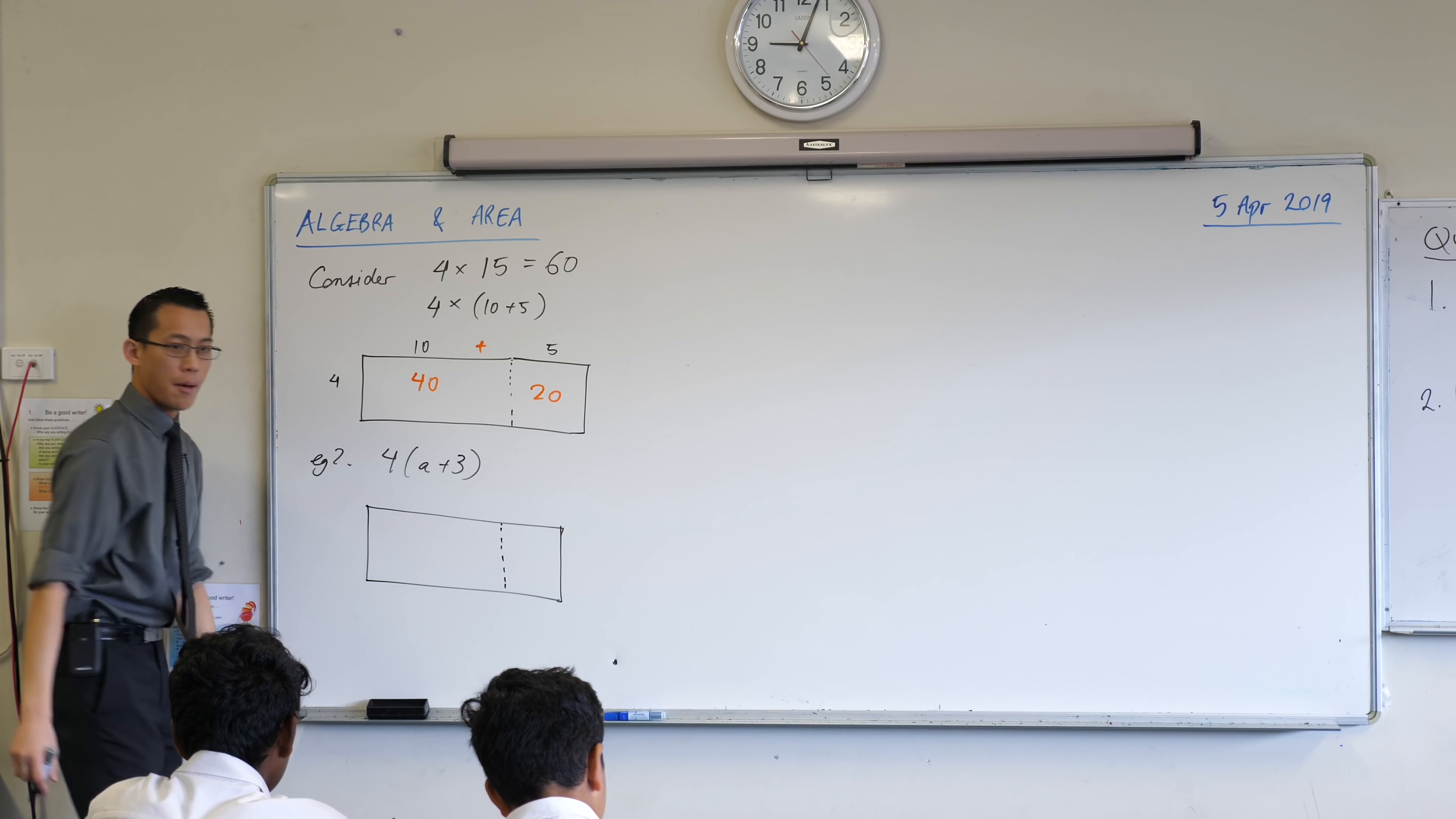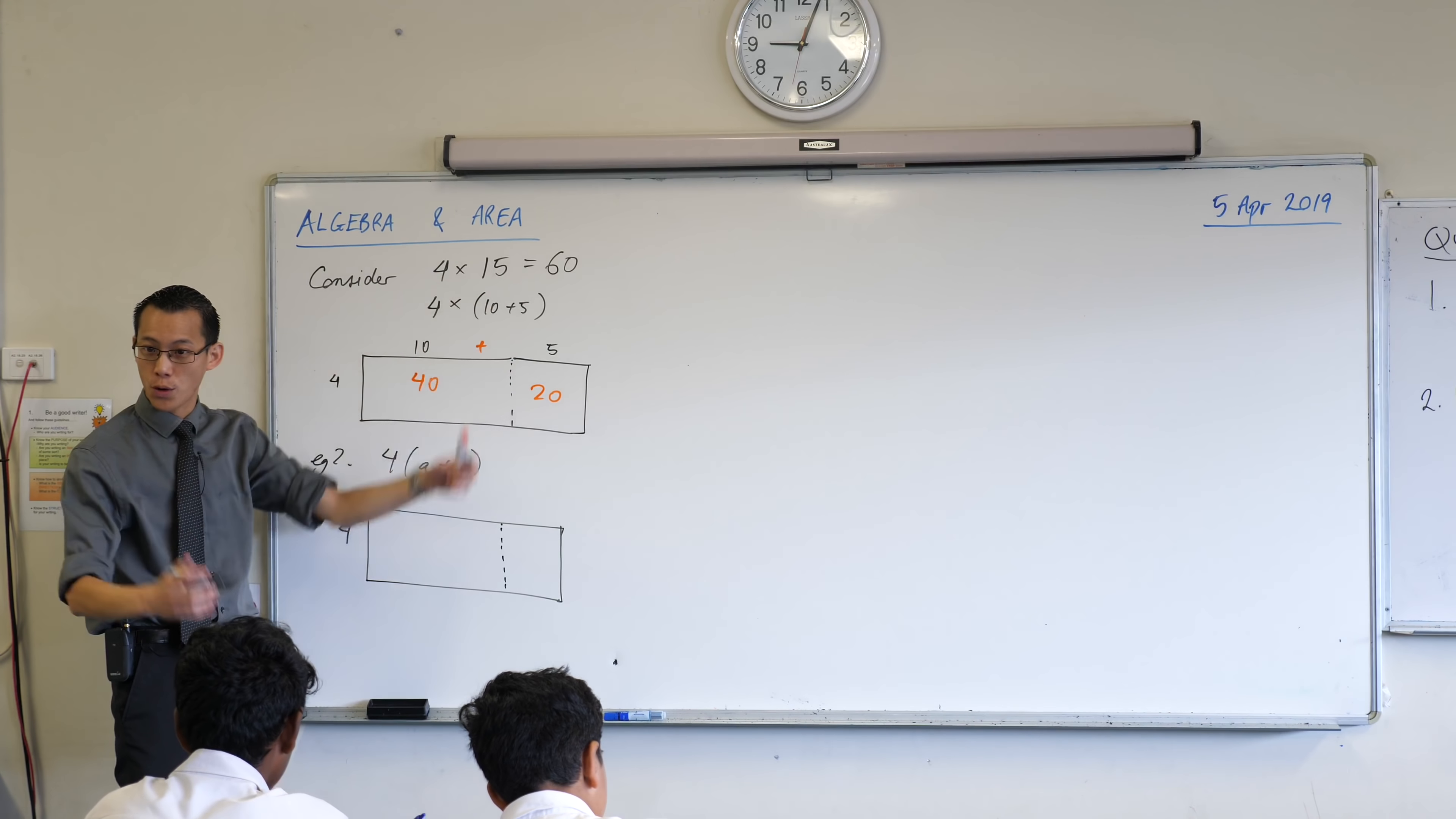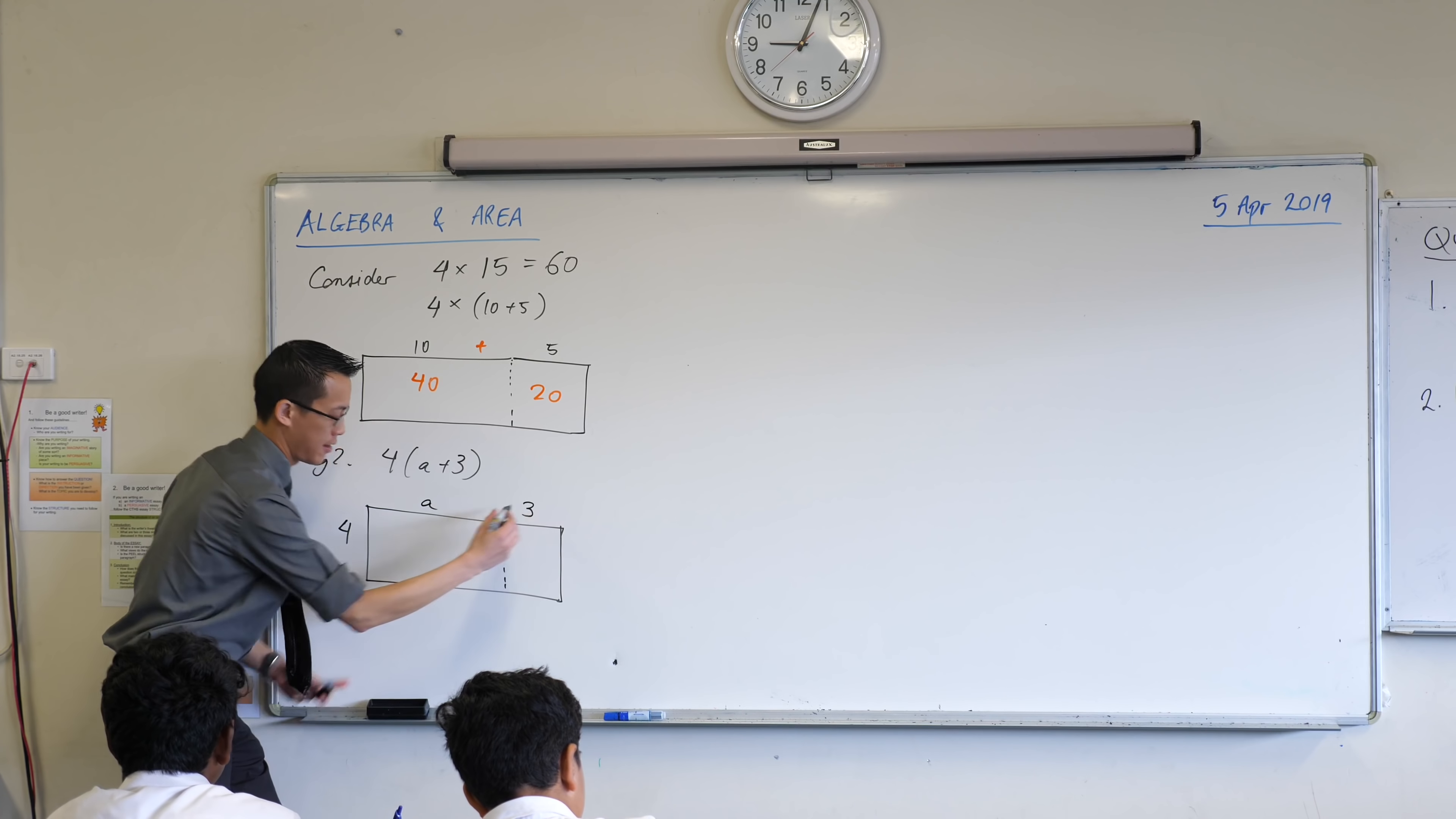Same rectangle, but this time I'm going to put some different numbers on it. I've got a 4 over here, just like before, but instead of 10 and 5, which is what I had inside the bracket before, what shall I label on my tops here? A and 3.